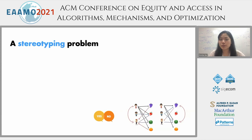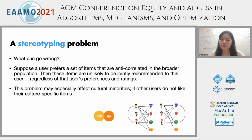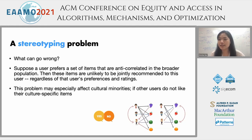That is what we call here the stereotyping problem. If a user prefers a set of items that are anti-correlated in the broader population, then these items are likely to be jointly recommended to this user regardless of their true preferences and ratings. In particular, this problem may especially affect cultural minorities. If other users do not like their culture-specific items, these diverse preferences are hardly captured by CF-based techniques.